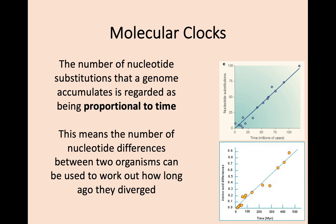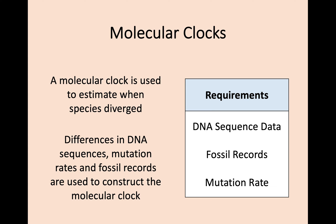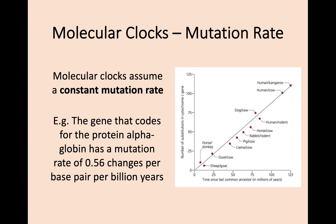Molecular clocks are a method of dating that are more commonly used now and are seen as more precise. This method is based on the knowledge that the number of nucleotide substitutions found in the genome is proportional to time, so it carries on at a constant rate. This means you can find out the number of differences in a certain gene between two organisms and calculate how long ago they diverged. We can use the mutation rate of a gene along with DNA sequence data and fossil records to create a more reliable estimate of sequence divergence. One example is the mutation rate for the gene that codes for alpha globin, which is the component of haemoglobin — this is known to have a mutation rate of 0.56 changes per billion years. If we assume this mutation rate is constant, we can compare that gene between different organisms and use the number of differences to calculate the time of divergence.